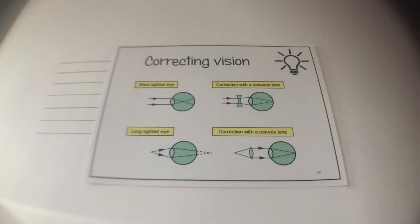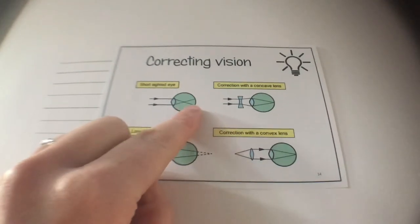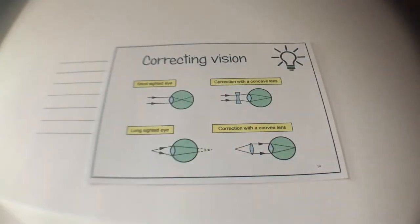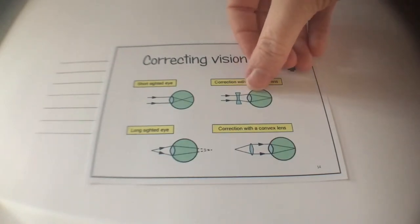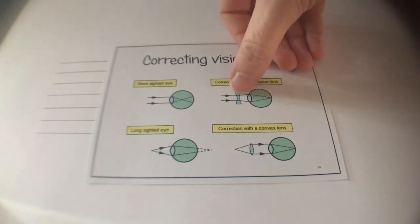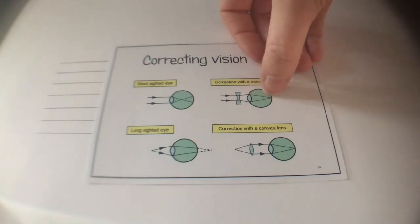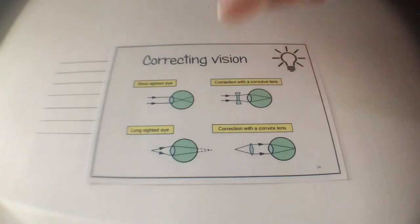Now we're looking at how we correct short-sightedness. As you can see from this top line of pictures, we use a concave lens to extend the focal length. We need that focal point to land on the retina, and in someone who is short-sighted that doesn't happen. So we bring in the concave lens and it extends the focal length because it refracts the light outwards, spreading the light so that by the time it hits the lens it has further to travel to extend that focal length.